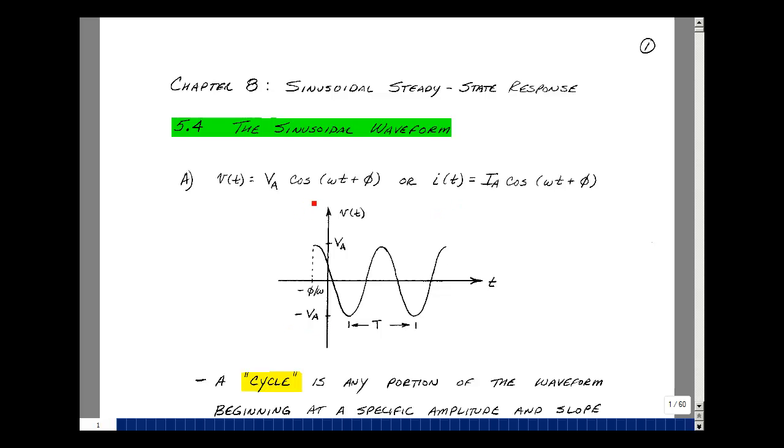The cosine function is equal to 1 when the argument is equal to 0. So if you set this equal to 0, you could solve for the value of T that would make the cosine function 1. That turns out to be when T is equal to minus phi over omega. You end up getting the omegas cancelling, and you get a minus phi plus phi equal to 0.